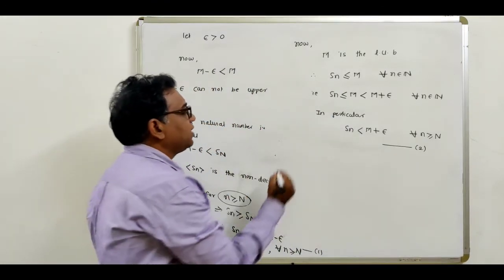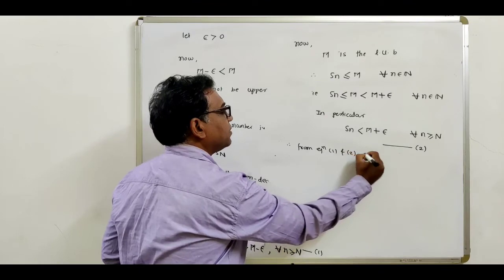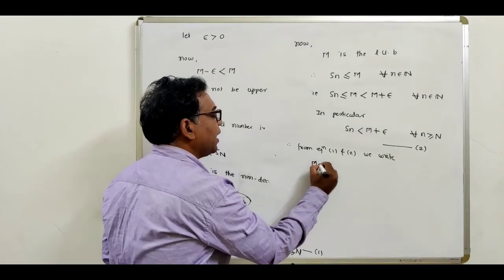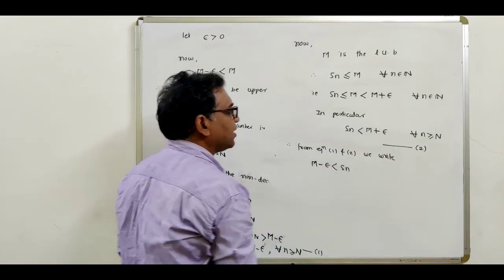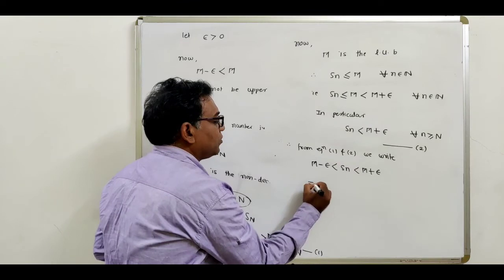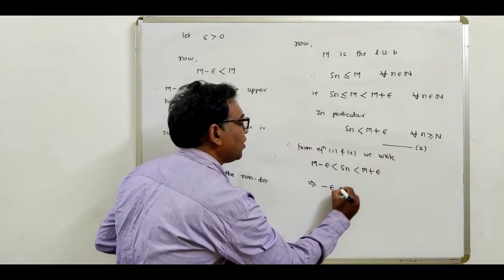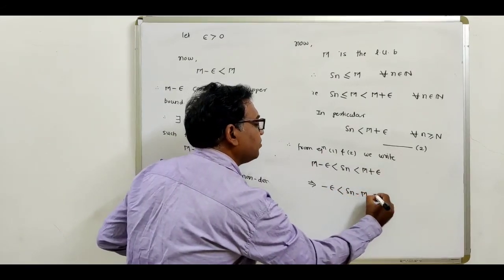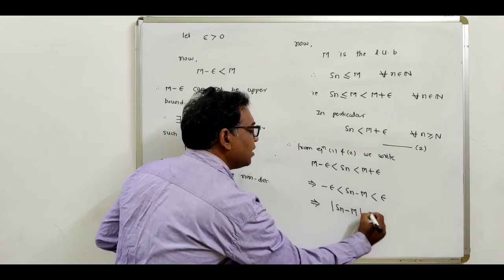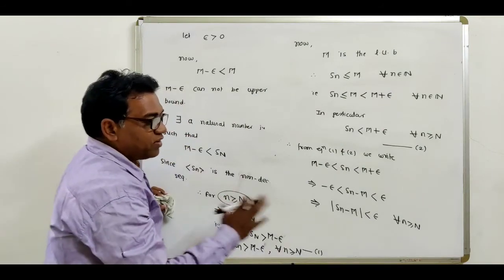Combining equation 1 and equation 2: M minus epsilon < sn < M plus epsilon. Subtracting M throughout: minus epsilon < sn minus M < epsilon. This implies that |sn - M| < epsilon for all n ≥ capital N. This is exactly the definition of a convergent sequence — for every epsilon > 0, there exists a natural number N such that |sn - M| < epsilon.